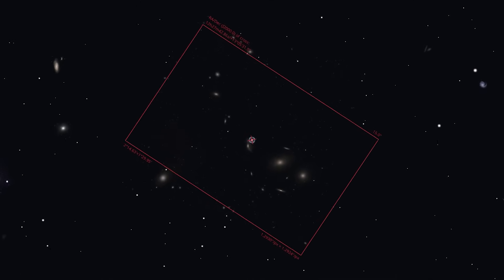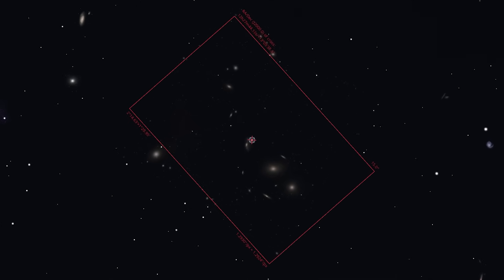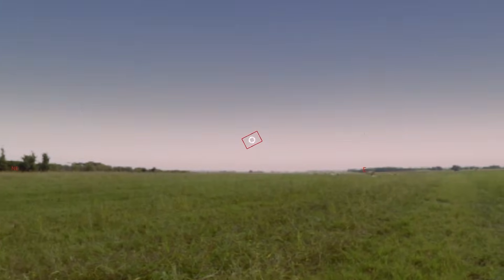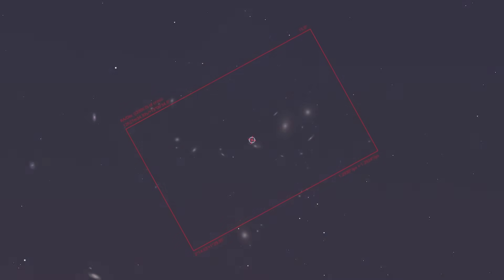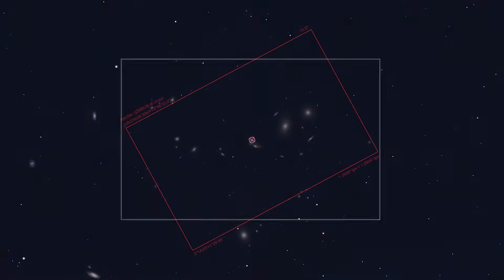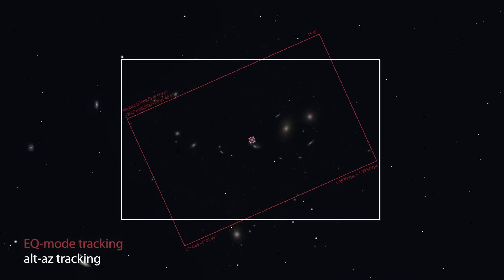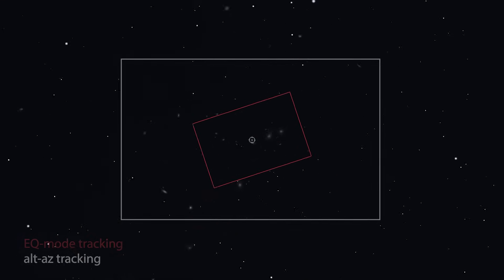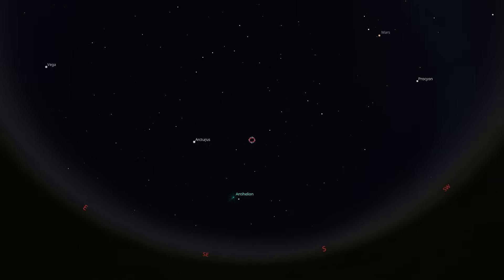This creates two problems when tracking objects in LS mode. First, since LS mode only tracks movement in up-down and left-right directions, it cannot follow the curved motion of celestial objects precisely. This is why the CSTAR app restricts exposures to 10 seconds.